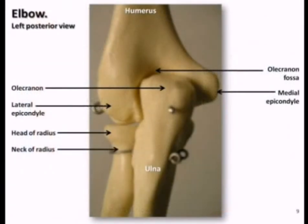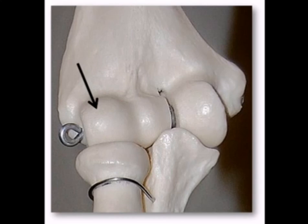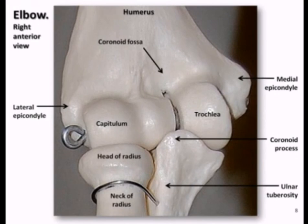The elbow joint is formed through an articulation between the humerus and the ulna and radius. It has two points of articulation: one is where the trochlea of the humerus articulates with the trochlear notch of the ulna, and the other is where the round capitulum of the humerus articulates with the head of the radius. The other articulations between the radius, ulna, and wrist will be reviewed in a future episode on the joints.